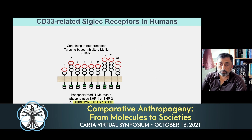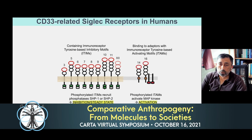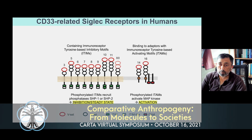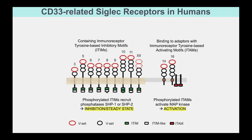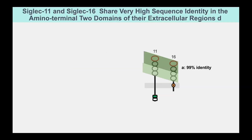Evolution always has more tricks up its sleeve. There's another group of siglecs that have the opposite action — they bind sialic acid and send a positive signal. This is the evil twin, if you will: Siglec-16. It gives you the opposite reaction — it attacks when it sees polysialic acid. The peculiar thing is if you look at these two proteins, at the amino terminus, the front end, they're 99% identical. But below that, they're only 80% identical.